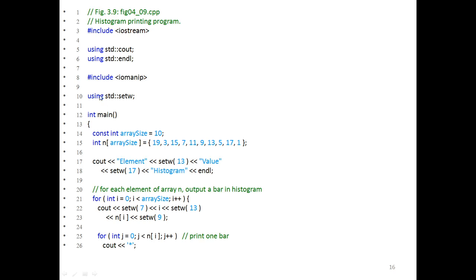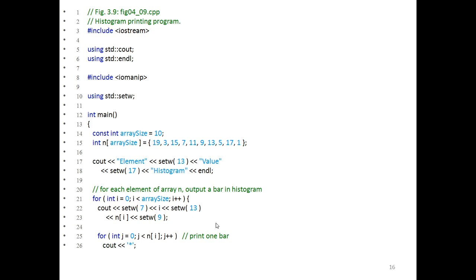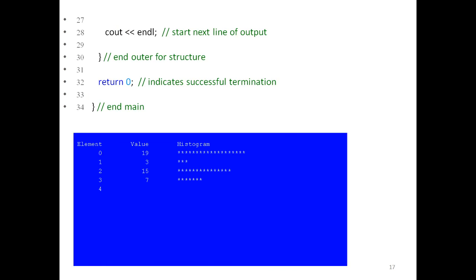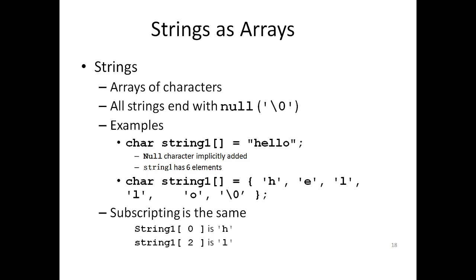There's another example with 10 elements where, depending on each array value, they print out asterisk symbols. The number of asterisks printed corresponds to the value of each array element. This gives a very cool visual result when you're starting to learn arrays — you can print the value and also print that many asterisk symbols to represent it visually.